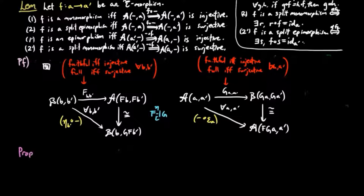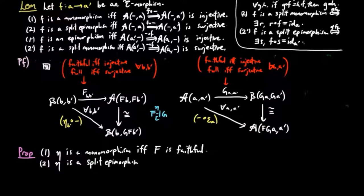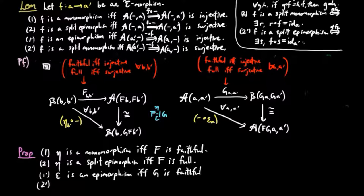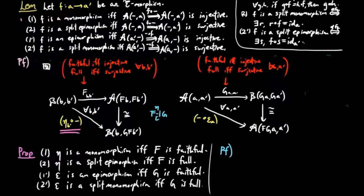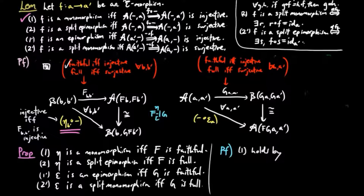Then with these observations, the following result becomes trivial. (1) eta is a monomorphism if and only if F is faithful. (2) eta is a split epimorphism if and only if F is full. (1') epsilon is an epimorphism if and only if G is faithful. (2') epsilon is a split monomorphism if and only if G is full. To prove (1): F is faithful if and only if for each pair of B objects B, B', F_{BB'} is injective. If and only if for each component B' of eta, and for each component B of the post-composition by eta_{B'} natural transformation, the diagonal morphism is injective. And then by (1) of the lemma above, this is equivalent to eta_{B'} being a monomorphism for each component B', which means eta is a monomorphism.